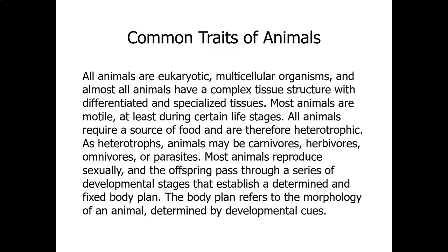All animals are eukaryotic. This is traits that all animals have. They're all eukaryotic, meaning the cells have a nucleus. They're all multicellular. And almost all have a complex tissue structure with differentiated and specialized tissues, but not all of them. Sponges do not have tissues.